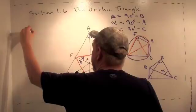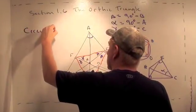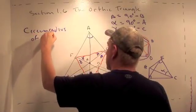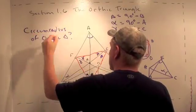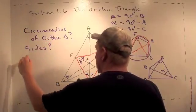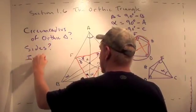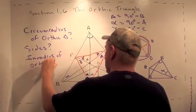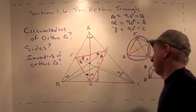what's the circumradius of the Orthic Triangle? What are the sides? What's the inradius of the Orthic?